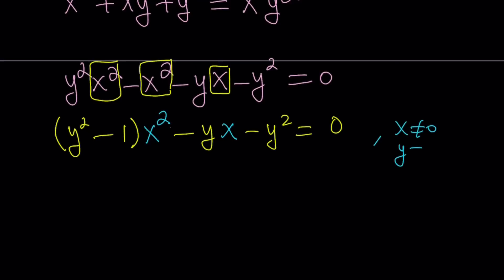We said that x and y are different from 0 already. But we have additional restrictions, such as, in order for this to be a quadratic equation, y squared minus 1 needs to be different from 0. So let's write that down too. Now what happens if y squared minus 1 equals 0? It just means y is equal to 1 or negative 1. We can also look at those cases separately.